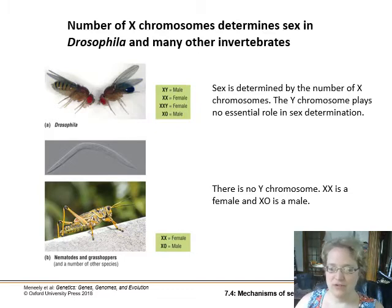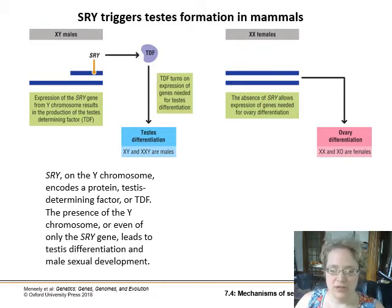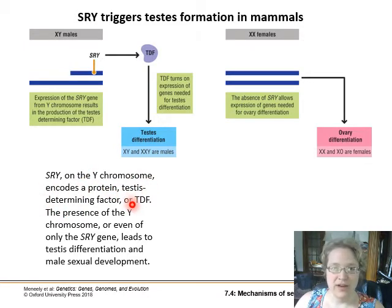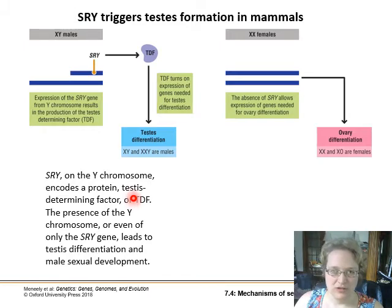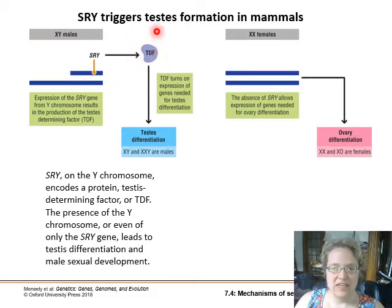There is a section on dosage compensation we won't get too heavy into, but it is a neat phenomenon. In mammals specifically, there is a region called SRY — the sex-determining region on the Y chromosome — and that encodes a testes-determining factor, TDF, which is a transcription factor. If present, it starts a cascade of gene expression pathways that initiate testes differentiation, gonad development, and the path toward male sex development. That's one of the very first key triggers in that development.